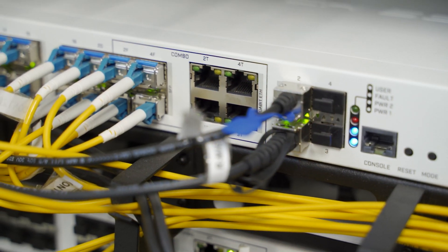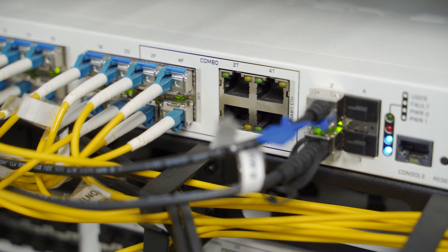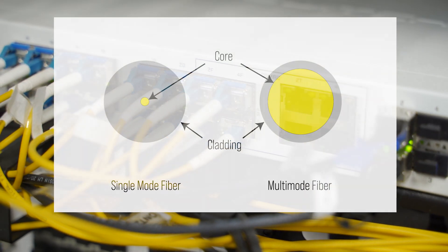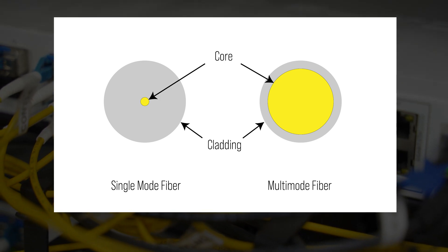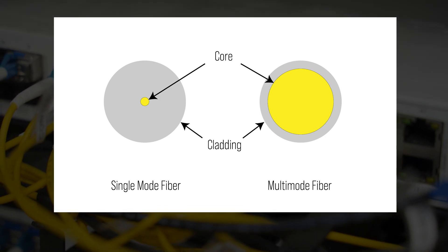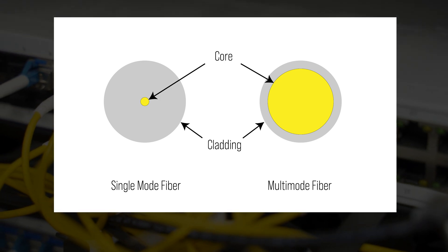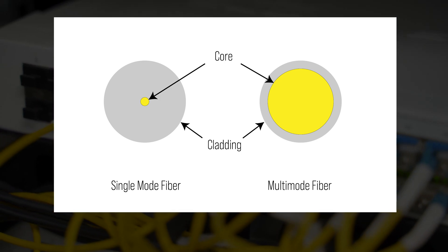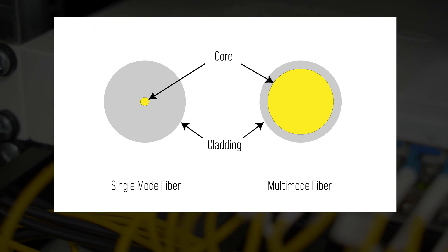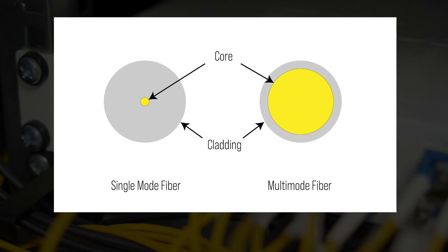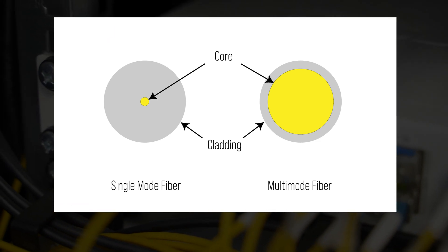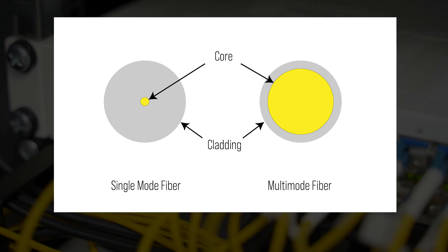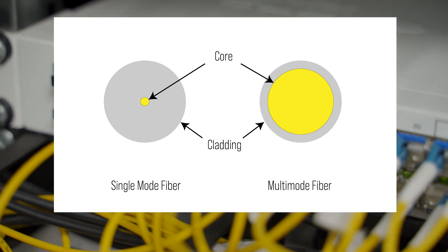There are two types of fibre optic cables in networking. Multi-mode, which has a thicker core, is cheaper and is used for shorter distances. Then there is single-mode, which has a thinner core for longer distances but is more expensive.